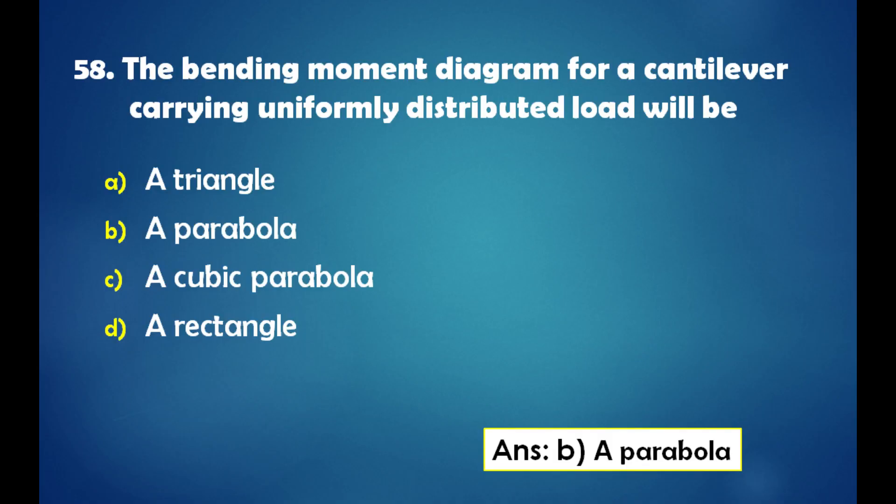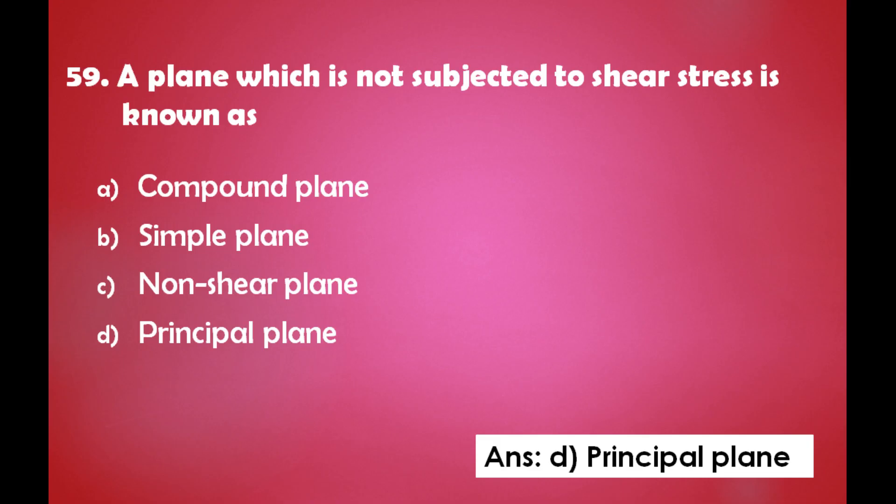The bending moment diagram for a cantilever carrying a uniformly distributed load will be: a) a triangle, b) a parabola, c) a cubic parabola, d) a rectangle. The answer is: the bending moment diagram for a cantilever carrying a UDL will be a parabola.